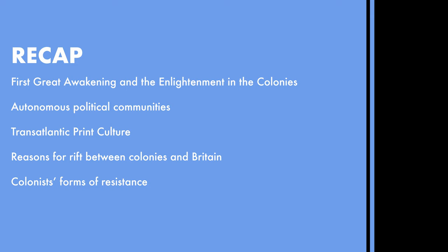For the recap: remember the First Great Awakening and the Enlightenment — how they started, where they came from, and why they are important. Also remember the autonomous political communities — the colonial legislatures based on English models — the transatlantic print culture, and the reasons for the rift between the colonies and Britain, as well as the colonists' forms of resistance.